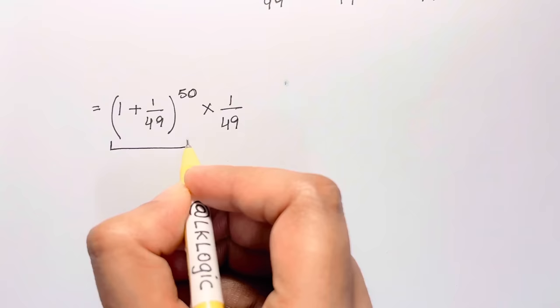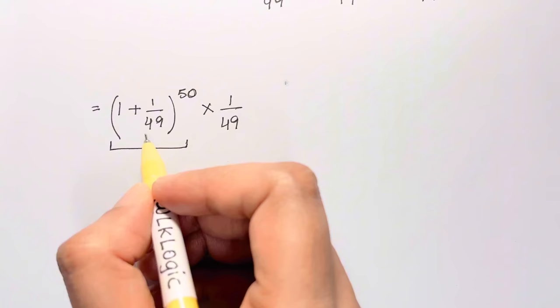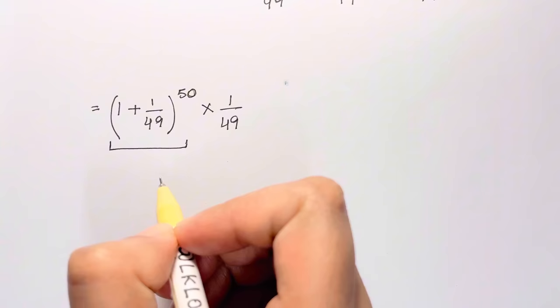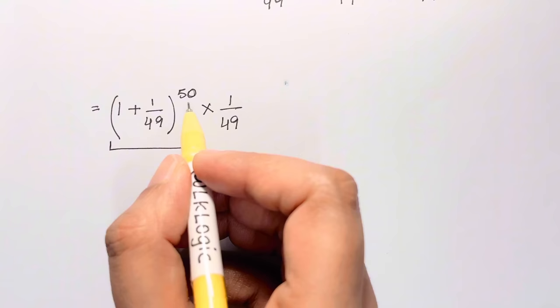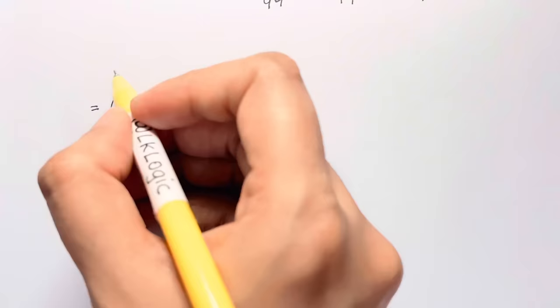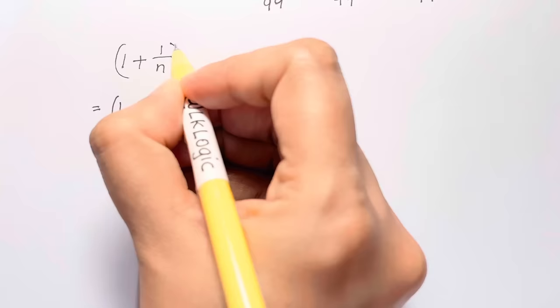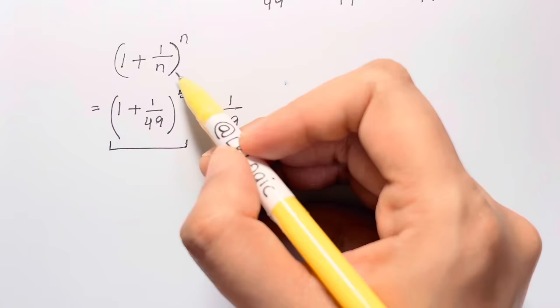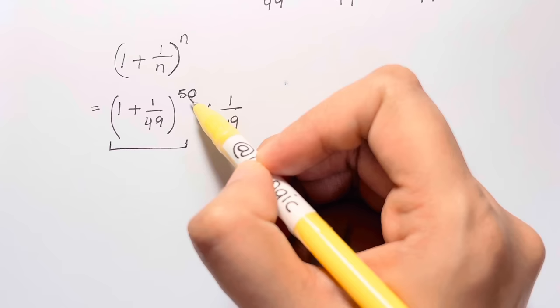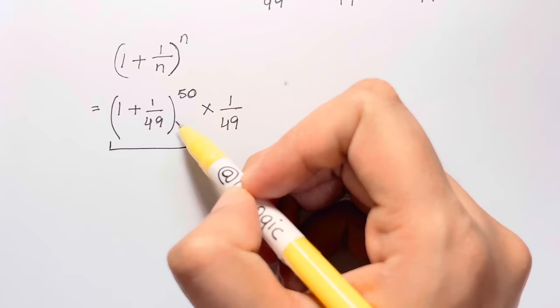Now we have a problem here. We always like the form (1 plus 1 over n) to the power of n, but if we substitute n equals 49, the exponent is not 49 — it's 50. So we need to deal with this exponent.